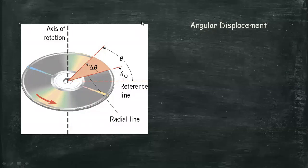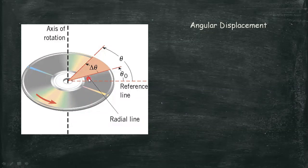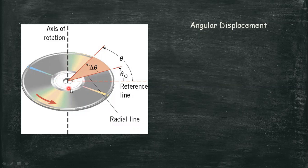Angular displacement is when a rigid body rotates. In the given illustration, a compact disc rotates about an axis. The angular displacement is the angle swept out by a line passing through any point on a body and intersecting the axis of rotation perpendicularly.